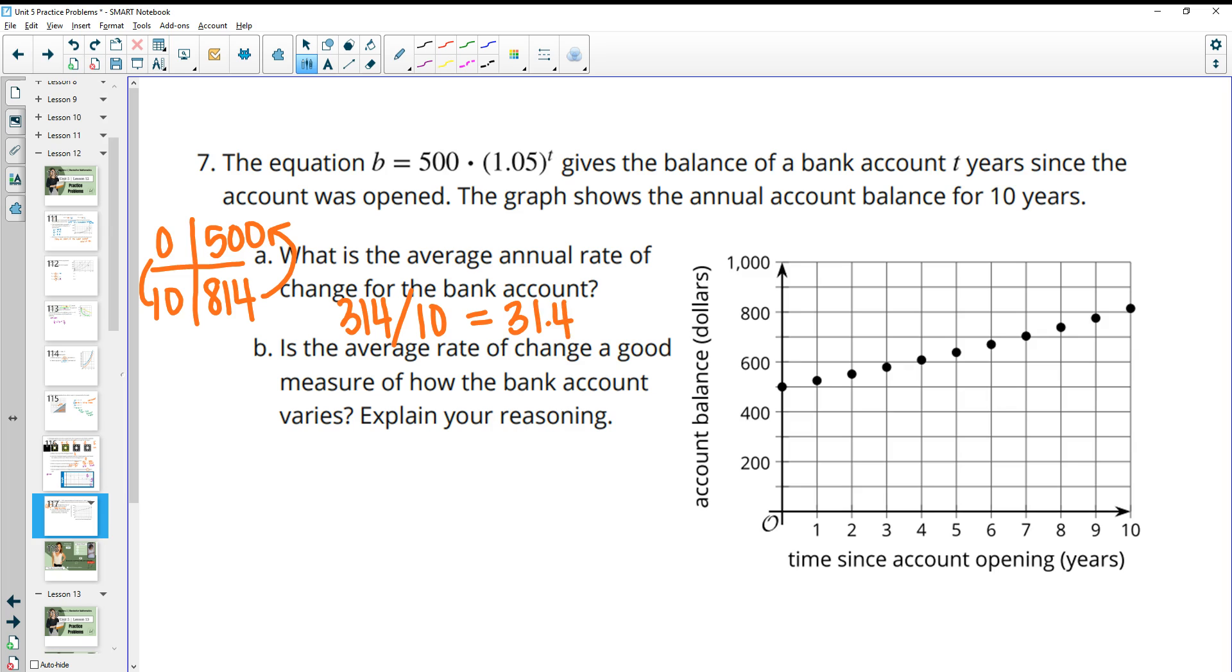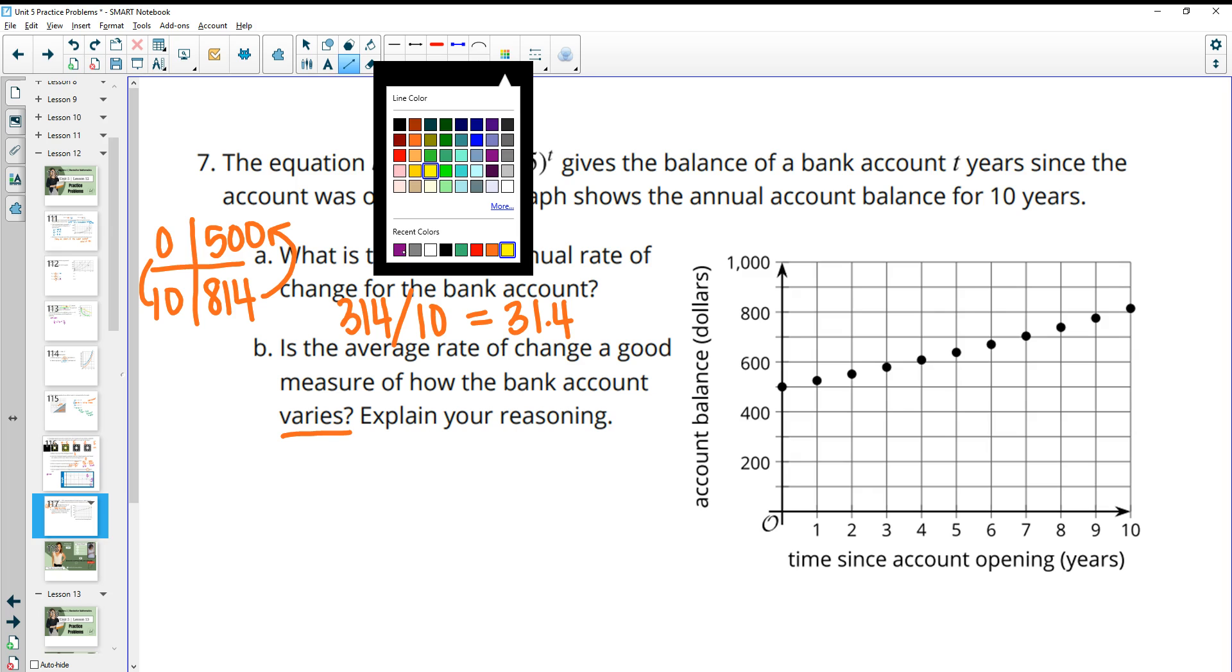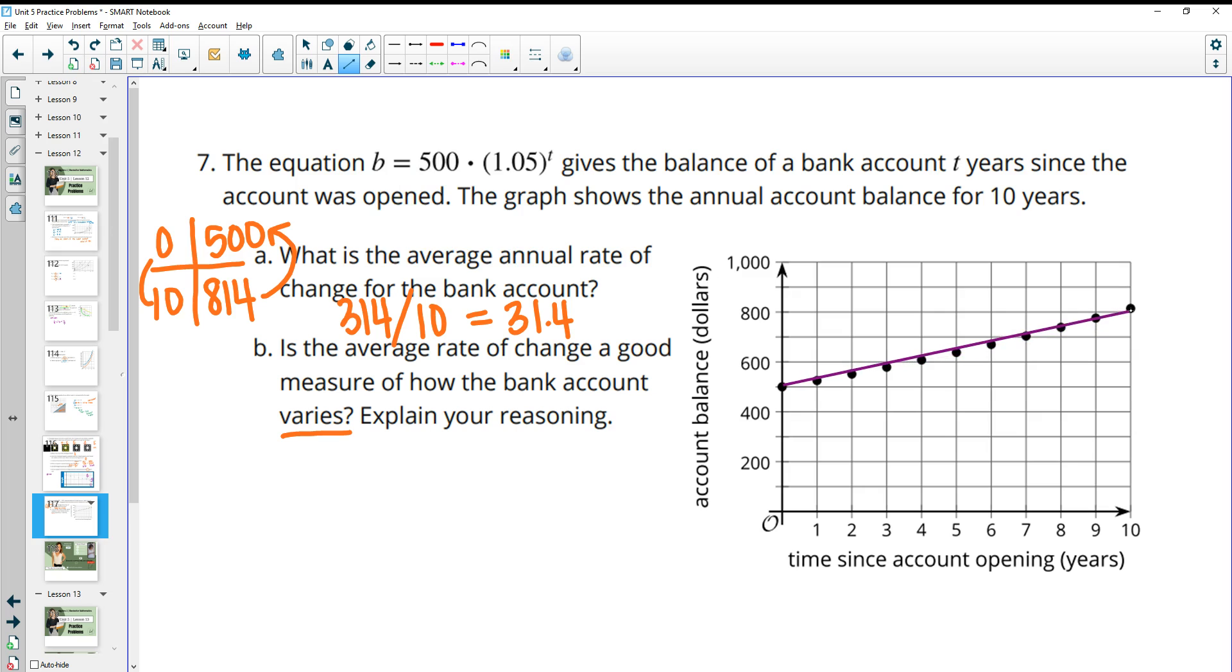And then it asks us, is this average rate of change a good measure of how the bank account varies? That would be connecting these dots from here to here just with a straight line. And in this case, it is a pretty good indicator. It does hit most of these dots, it's pretty close. So you're not off by much. However, as time goes on, it's really not going to be because we're only seeing just a small chunk of this graph. As time goes on, that's going to significantly change. It's going to move exponentially. So you're kind of sitting in this part right here and zoomed in on a small portion of it.